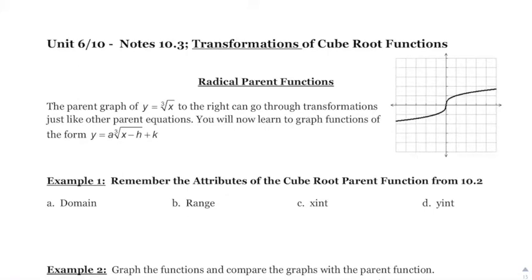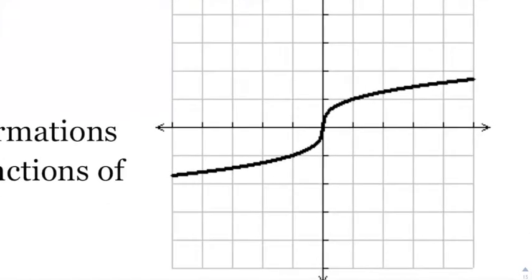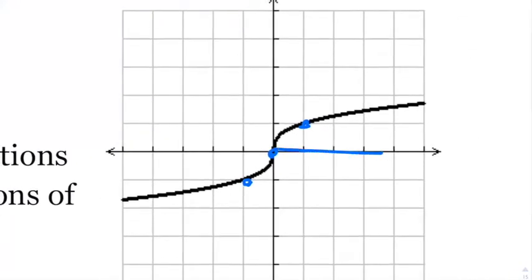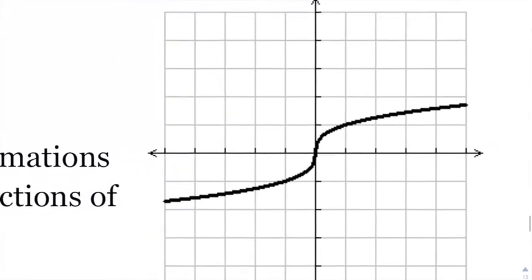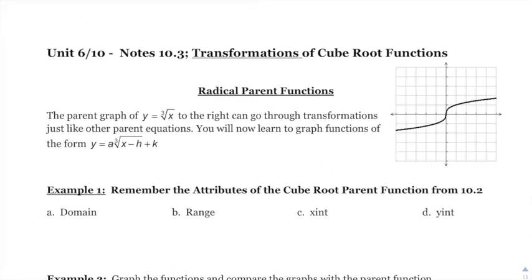Today we're going to take our cube root functions and perform some transformations — move them up, down, left, right, and sometimes do vertical stretches and compressions, even some horizontal stretches and compressions. Here's your parent function: a typical cube root function — go over one and cube root that, and it's up one; go over eight and cube root that, it's up two. Domain and range both go from negative infinity to infinity, and the x and y intercepts are at zero comma zero.